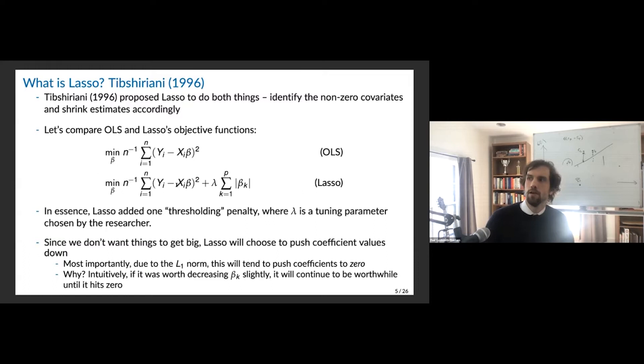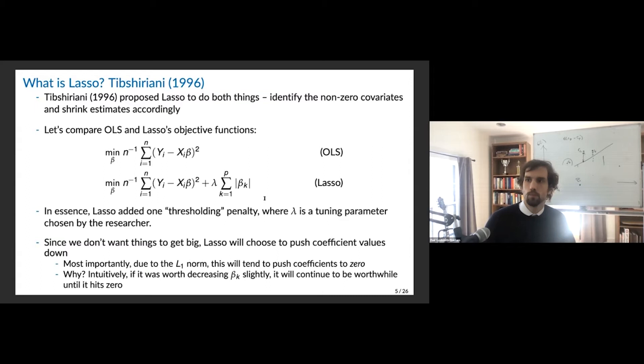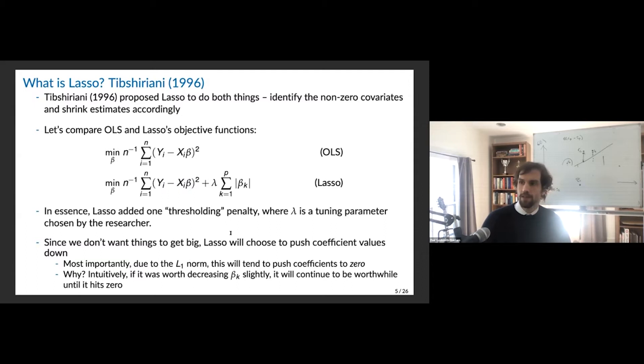It's like a budget constraint — a budget constraint for your coefficients. Lasso just adds a thresholding penalty where lambda is the tuning parameter chosen by the researcher. Since we don't want the sum of squared errors to get big and we don't want the coefficients to get big, lasso is going to push coefficient values down in order to keep the second penalization term from blowing up. That's going to regularize the parameter values.